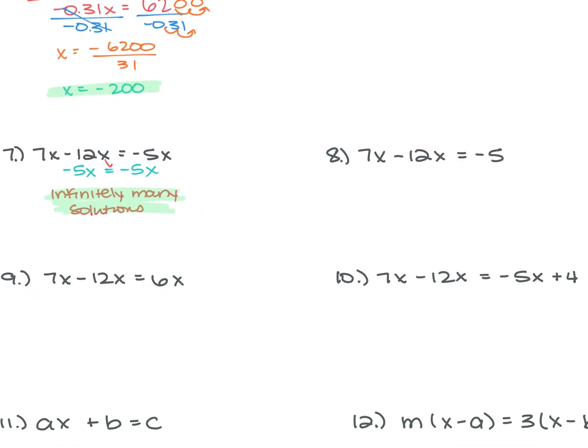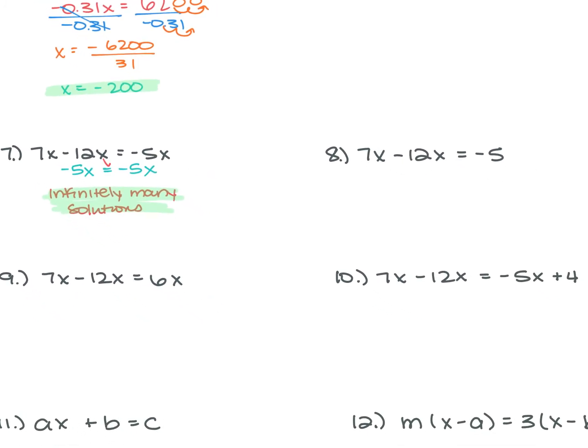For number 8, we have 7X minus 12X is equal to negative 5. Again, 7X minus 12X is negative 5X. So negative 5X is equal to negative 5. You only have an X on one side, so get X by itself — divide by negative 5. X equals 1.